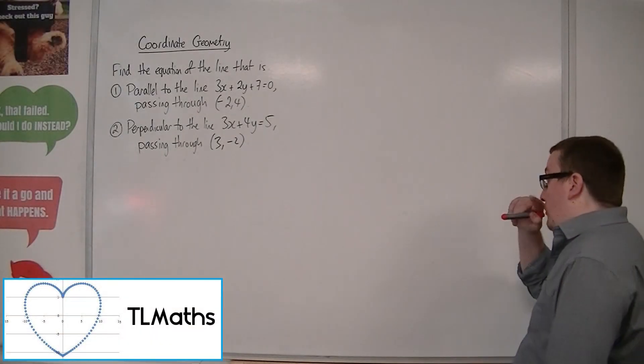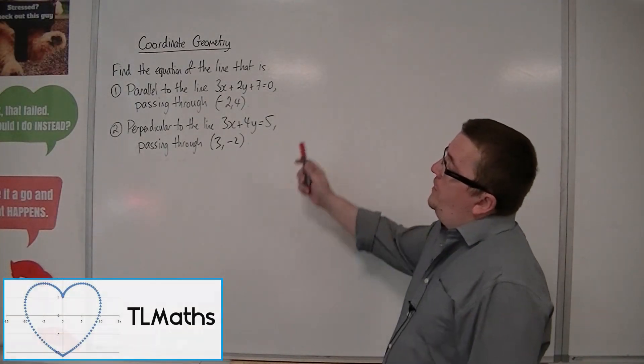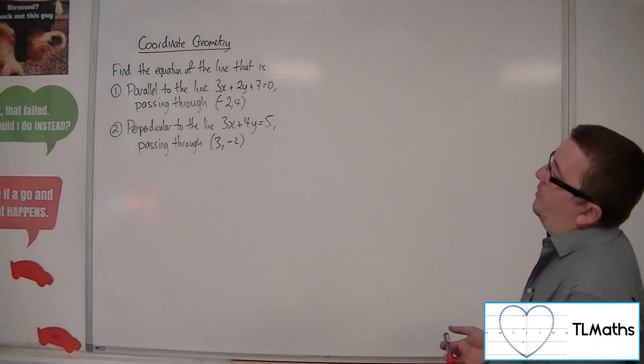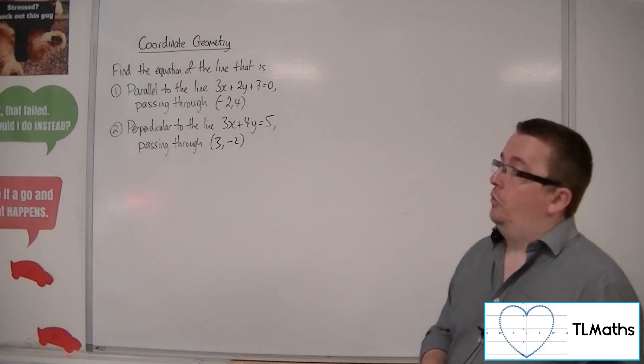Okay, so we've got two little questions here. Firstly, define the equation of the line that is parallel to the line 3x plus 2y plus 7 equals 0, passing through the point minus 2, 4.